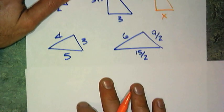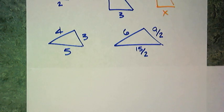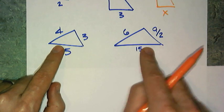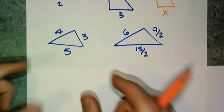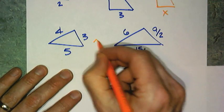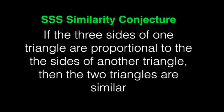What if I don't tell you the angles — is just having the sides proportional enough? The answer is yes. If I have sides that are proportional, I've just created a dilation — nothing more than taking that triangle and making it larger or smaller. So, yes, they are similar. That leads us to the side-side-side similarity conjecture: if three sides of one triangle are proportional to the three sides of another triangle, then the two triangles are similar.